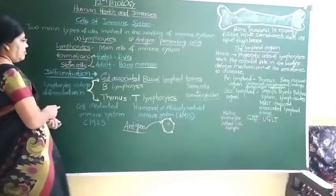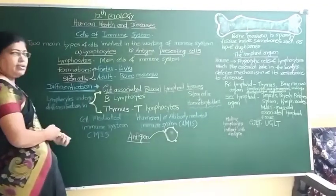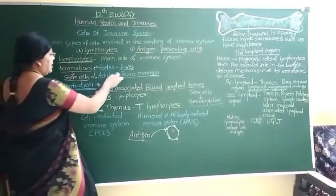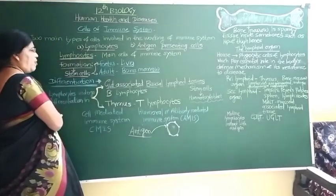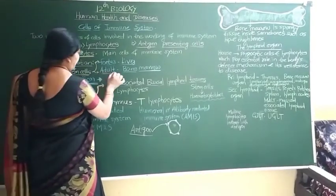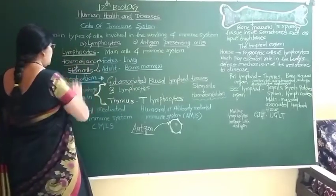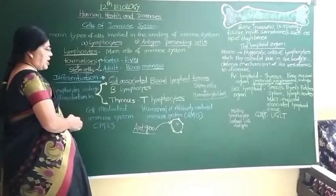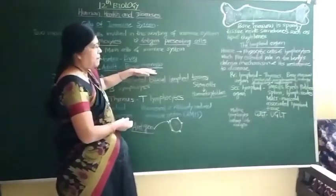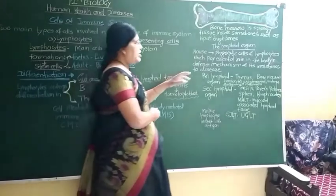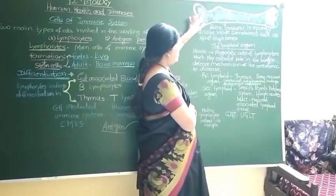In the fetus, when the individual is in the uterus, the stem cells for lymphocytes are detected in the fetal liver. Later, they are found inside the bone marrow, which is a spongy tissue found in some bones.